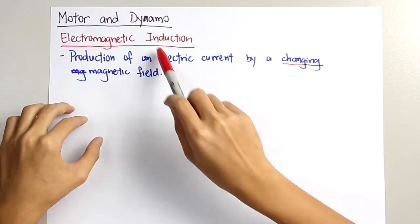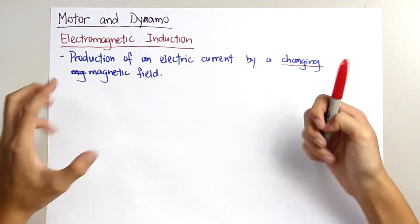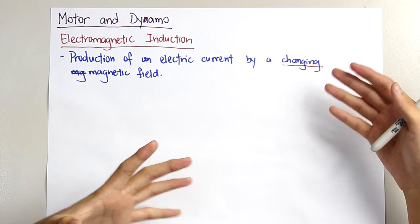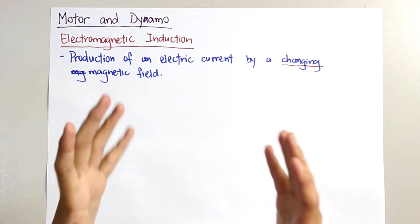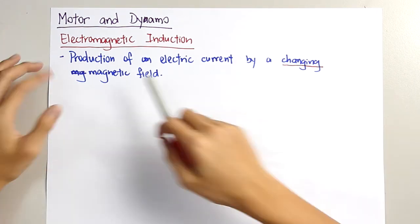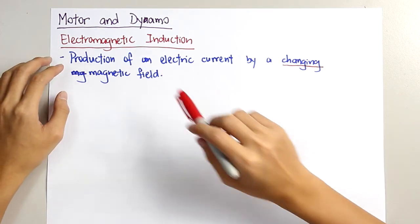So we focus on the word induction. It comes from the word induced. Now, do you know what is meant by induced? Induced means causing it to happen. So therefore, the production of the electric current means that the current is induced.